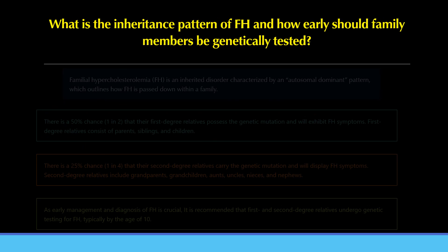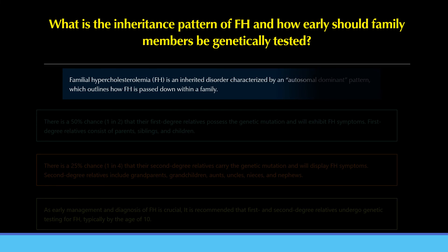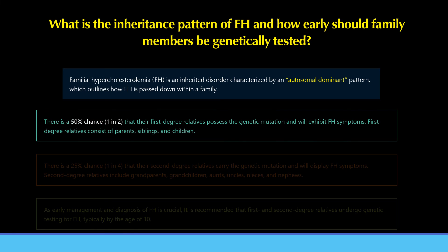What is the inheritance pattern of FH and how early should family members be genetically tested? FH is an inherited disorder characterized by an autosomal dominant pattern. When a person receives a genetic diagnosis of FH, there is a 50% chance — or 1 in 2 — that their first-degree relatives possess the genetic mutation and will exhibit FH symptoms. First-degree relatives consist of parents, siblings, and children.